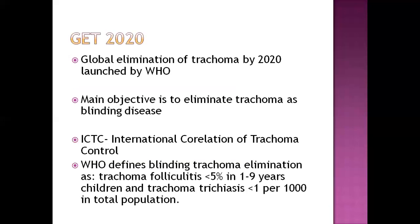GAT 2020 stands for Global Elimination of Trachoma by the year 2020, launched by WHO. Its main objective is to eliminate trachoma as a blinding disease, since trachoma is the leading cause of infective blindness. The program is run by the ICTC — International Coalition for Trachoma Control. The target is to eliminate trachoma to less than 5 percent in age groups one to nine years, and less than one per thousand in the total population.